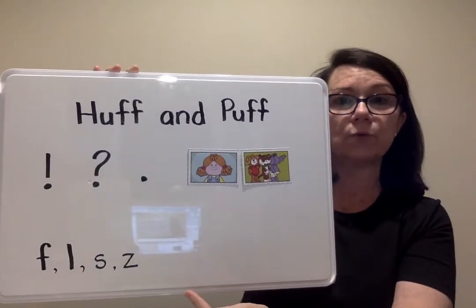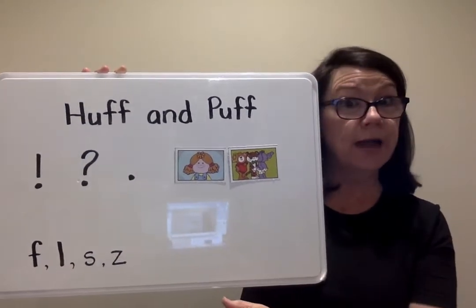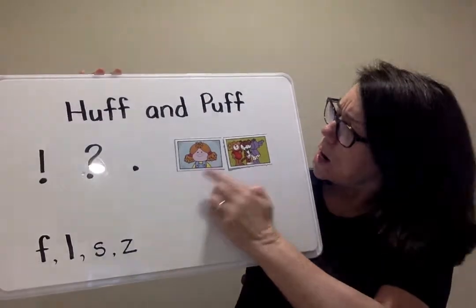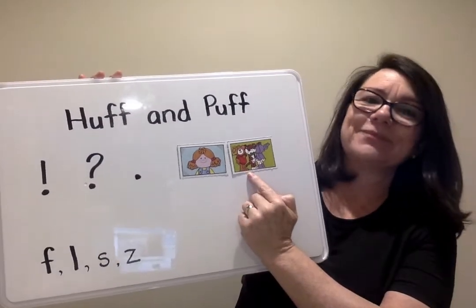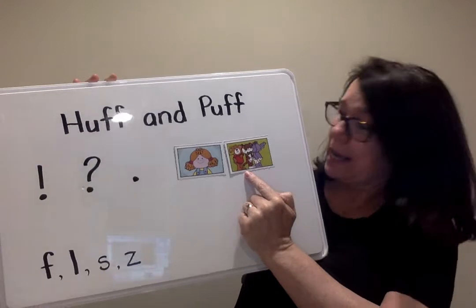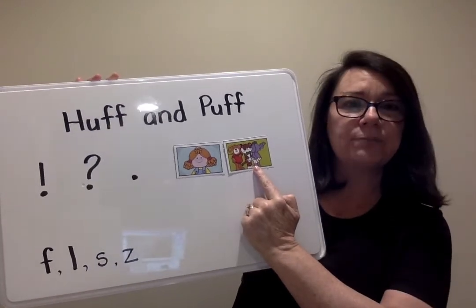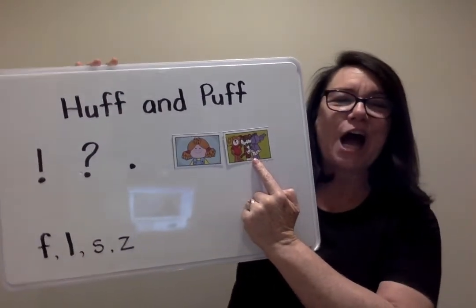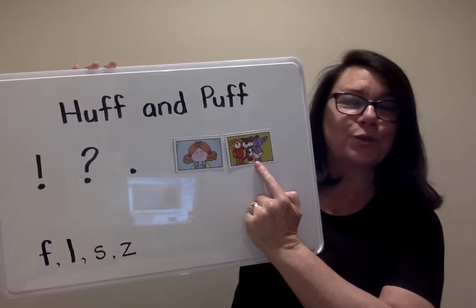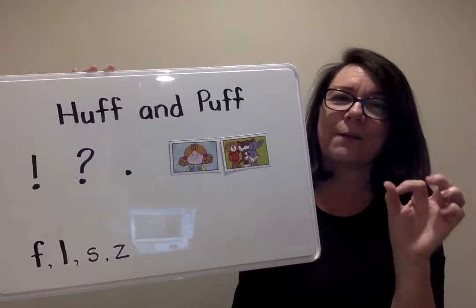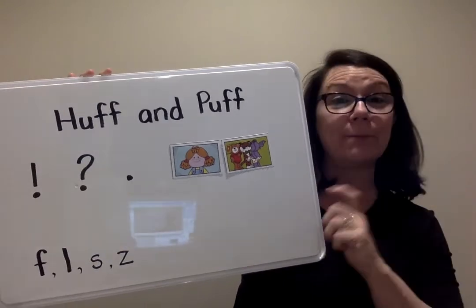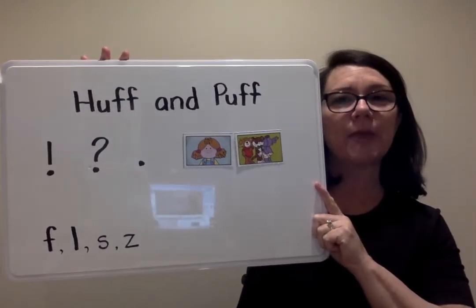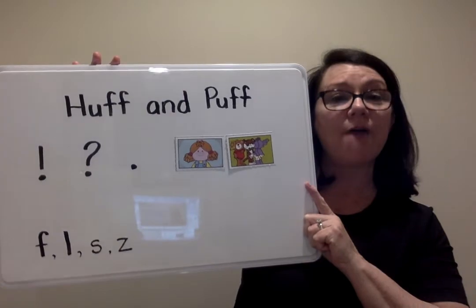So in our story today, our main characters will be Doll, Ted, Sneaky Tig, and Ed. We will see Flip for just a second — she makes a cameo appearance, which means she makes a very quick appearance but doesn't play a major role in our story today. So these are our main characters in Huff and Puff.